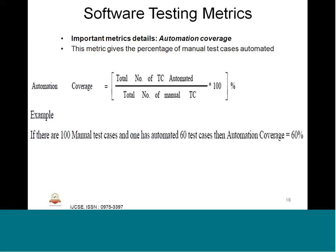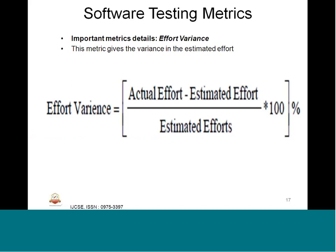Automation coverage is the percentage of manual test cases that have been automated. The formula is: total number of test cases automated divided by total manual test cases times 100. For example, if there are 100 manual test cases and 60 are automated, the automation coverage is 60%. Since testing cannot be 100% automated, there is always a mix of automation and manual testing. Effort variance is another important metric used by program management: actual effort minus estimated effort divided by estimated effort times 100.